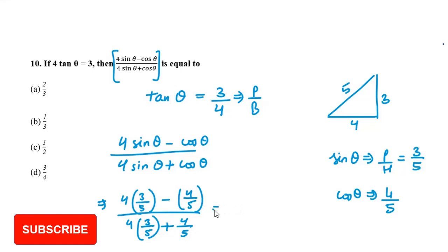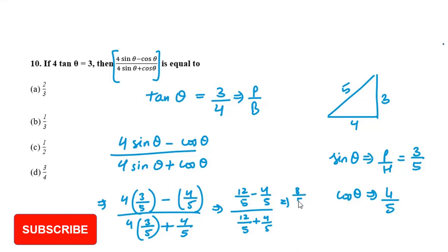The denominator is 12 by 5 plus 4 by 5. So we get 8 over 5 divided by 16 over 5. The fives cancel and 8 over 16 simplifies to 1 by 2. So the answer is 1 by 2, which is option C.